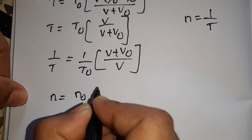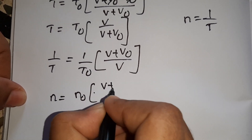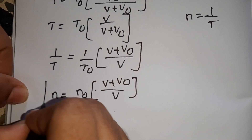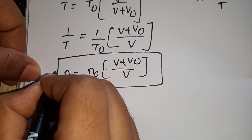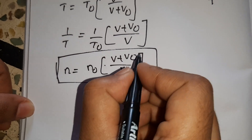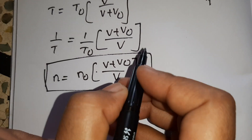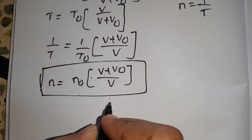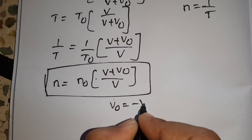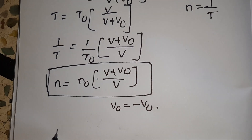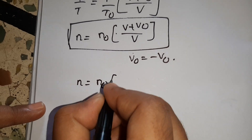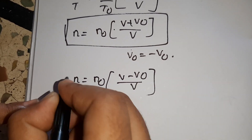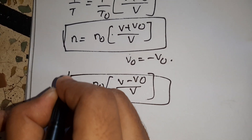So this is the Doppler shift effect. When the observer is moving towards the source, this equation applies. When the observer is moving away from the source, V0 is replaced by minus V0, and the equation becomes N is equal to N0 times V minus V0 by V. So this is the Doppler shift.